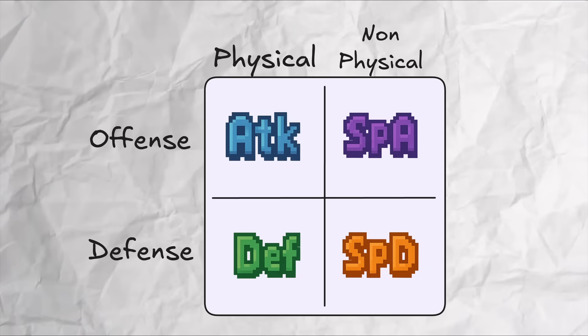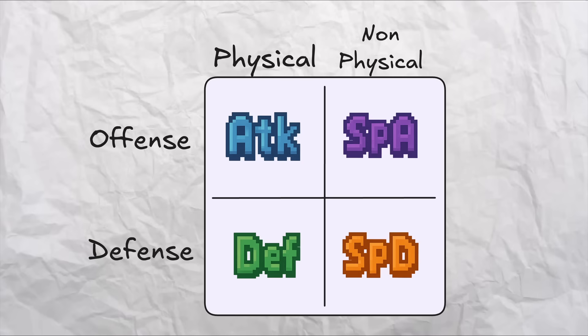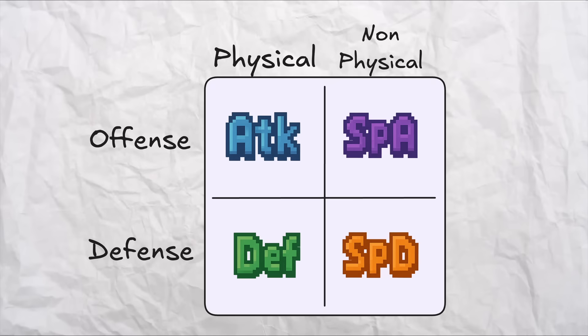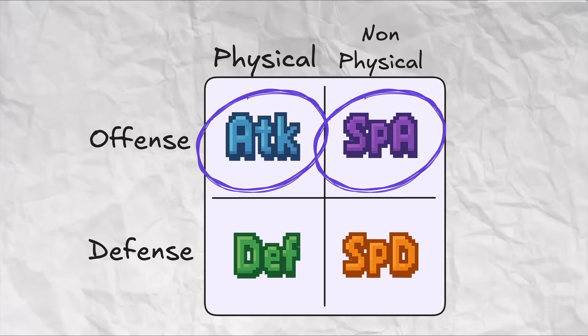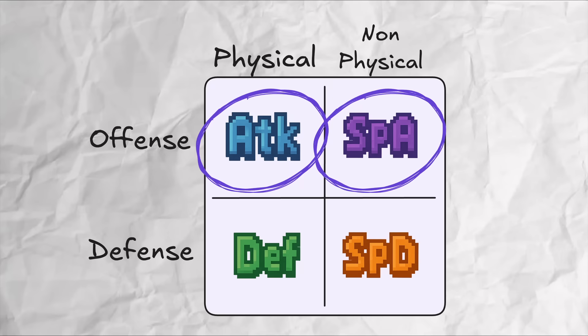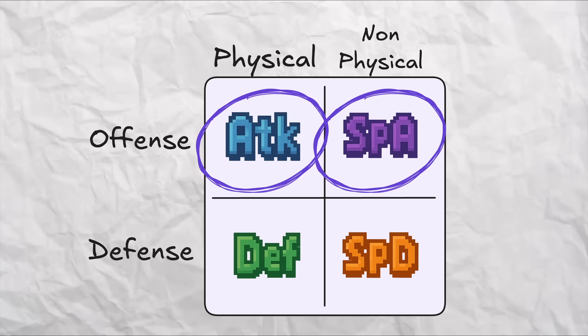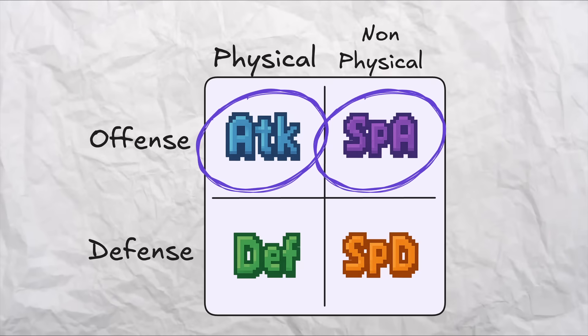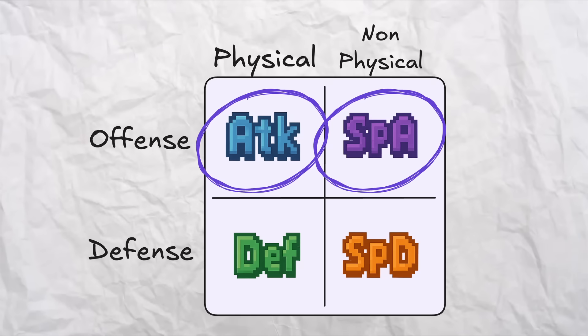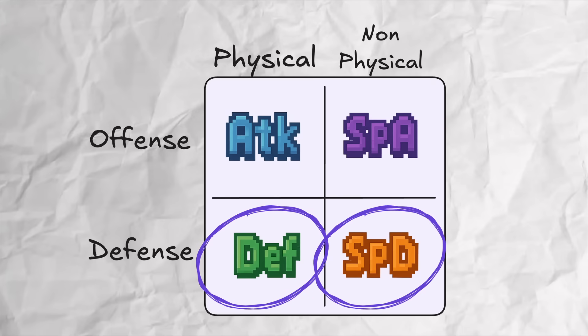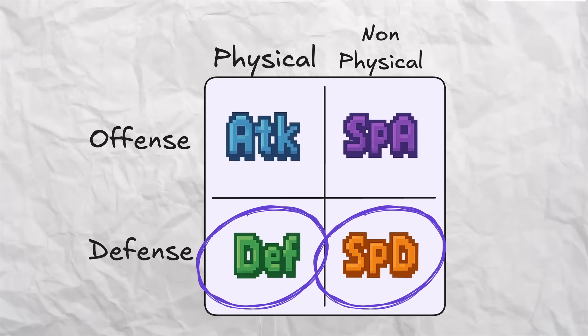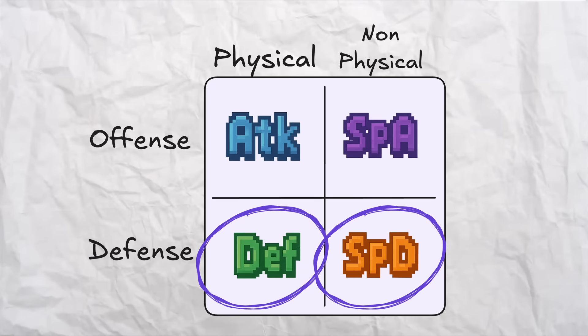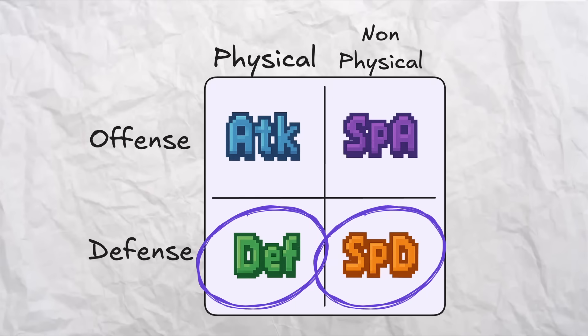The first four stats can be nicely captured in this little 2x2 matrix. On the rows, we have Attack or Defense, and on the columns, we have whether it's Physical or Special. Attack and Special Attack dictate how much damage your Pokemon deals with its attacks. Defense and Special Defense dictate how much damage your Pokemon takes from other Pokemon's attacks. The former relating to physical contact attacks, and the latter relating to attacks which do not make physical contact.